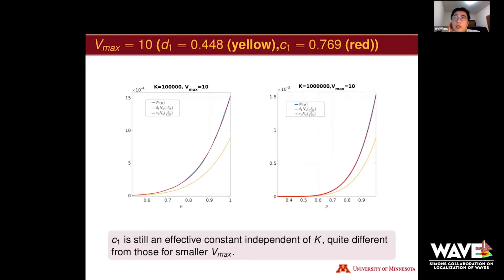Finally, if we try another example, V_max equals 10, it's not included in our previous practical landscape law, but it doesn't mean we can't find a suitable scaling constant. We find one. We try c1, another scaling constant, 0.769, because from the figure, the red line matches the true counting, the blue one, very well between zero and one. If we try the previous scaling constant c1 what we used for smaller V_max, we find obviously it can't be effective anymore. So c1 is an effective constant independent of the matrix size k, but it's not very close to the previous cases for smaller V_max.